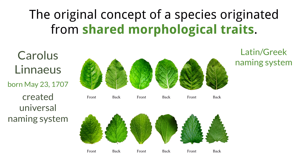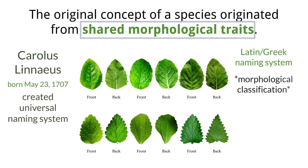He based these names solely on the physical features of the plant or animal, which he called morphological classification. So if two different species had similar physical traits, their names could be similar, but never the exact same, so one could tell the two species apart. This work was published in 1735 and was the basis for the system that we still use today.